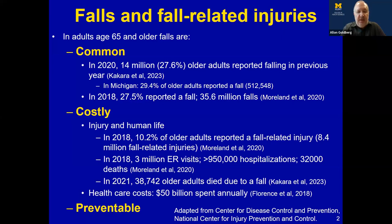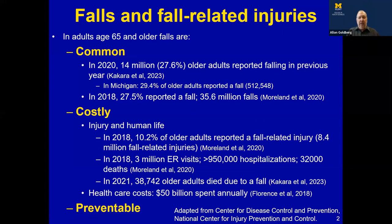By 2021, the number had crept up to 38,700 deaths due to a fall. Healthcare costs are very expensive — 50 billion dollars, that's billion with a B, are spent annually on falls. It is clear that this is a large public health crisis and we need to do everything we can to prevent falls. The good news is that there are ways we can prevent falls.